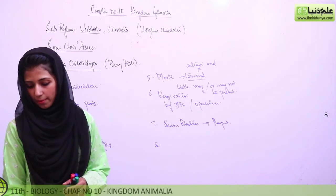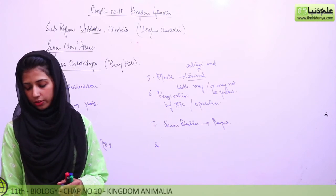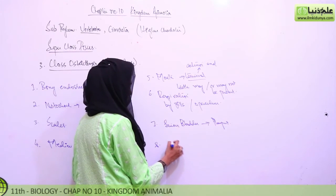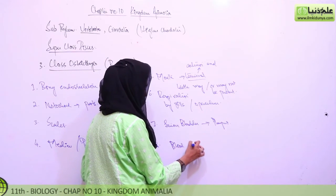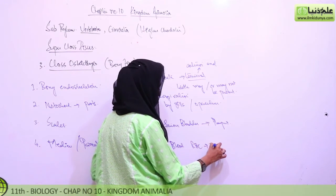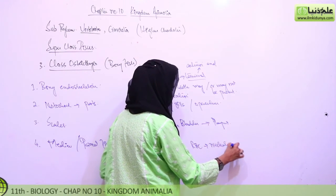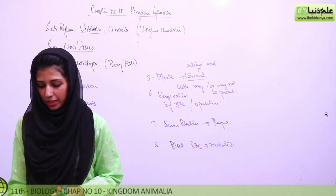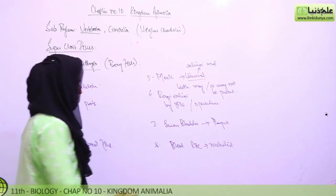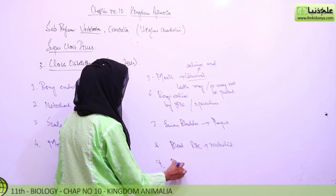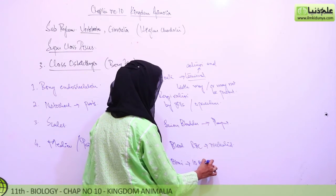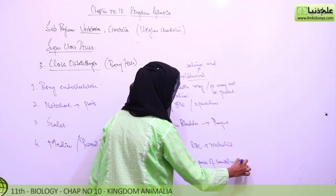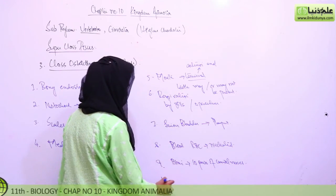Eighth: a two-chambered heart with one atrium and one ventricle. The blood has nucleated red blood cells — unlike in humans where RBCs are non-nucleated. The brain has ten pairs of cranial nerves, compared to twelve pairs in humans.